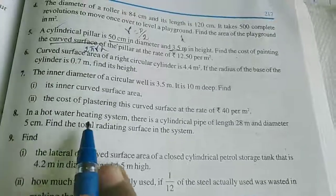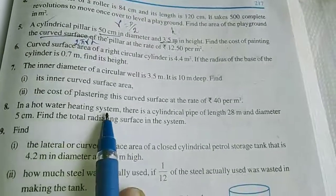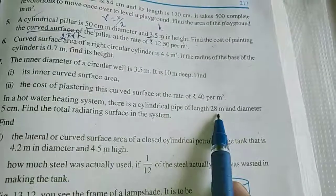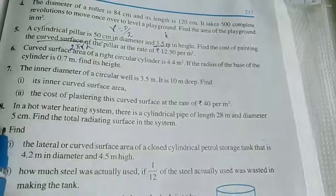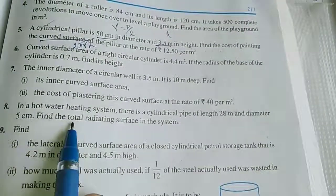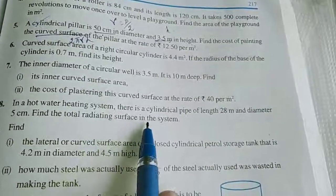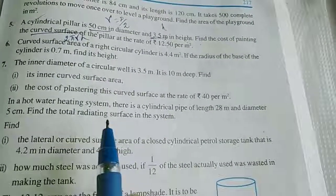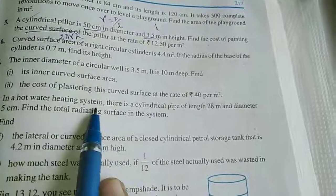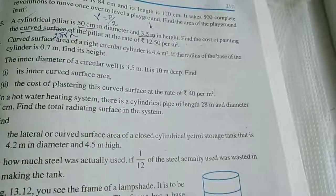In a hot water heating system, there is a cylindrical pipe of length 28 meter and diameter 5 centimeter. Find the total radiating surface in the system.